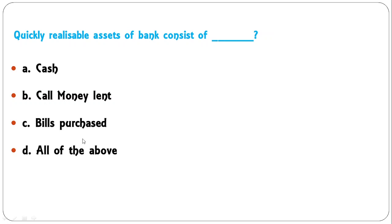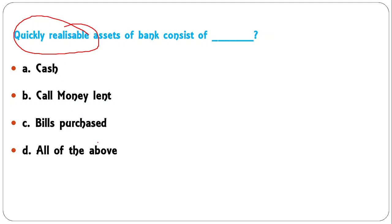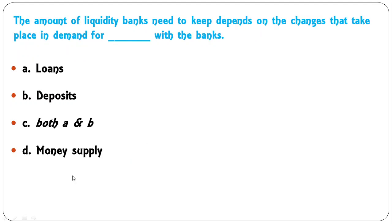Quickly realizable assets of a bank consist of: cash, call money lent, bills purchased, or all of the above? Quickly realizable assets include cash, call money, and bill purchases — all three — so D is the correct answer.